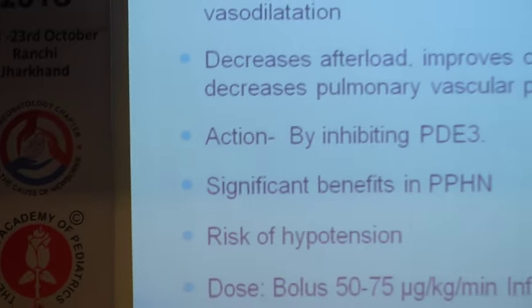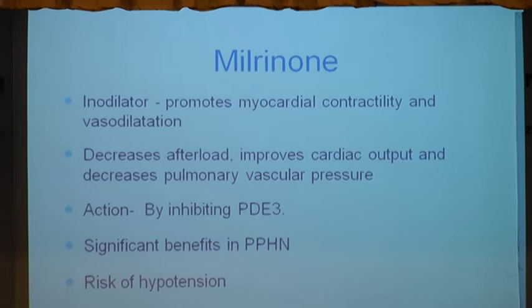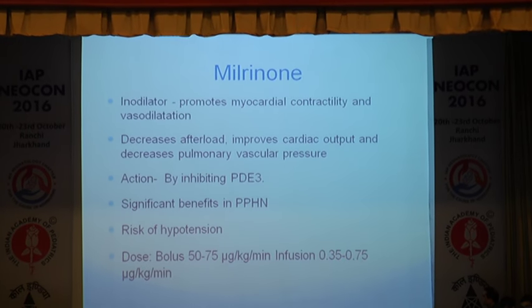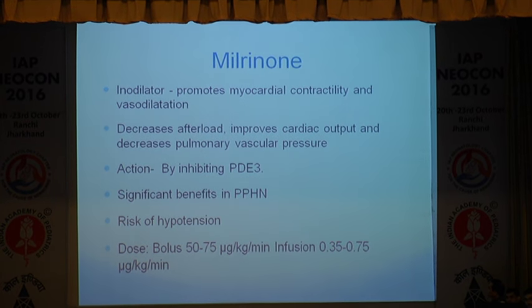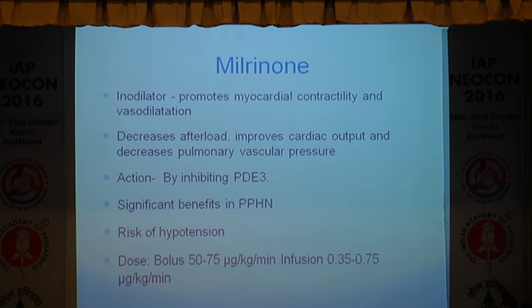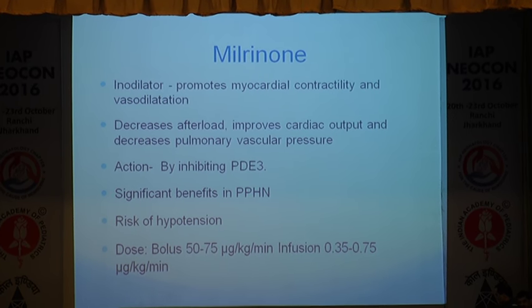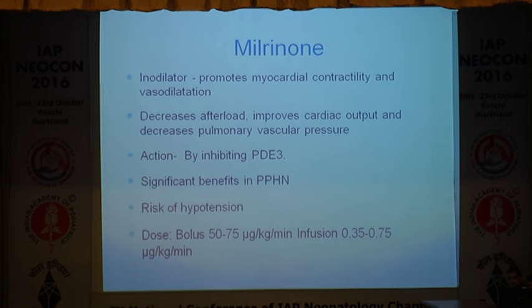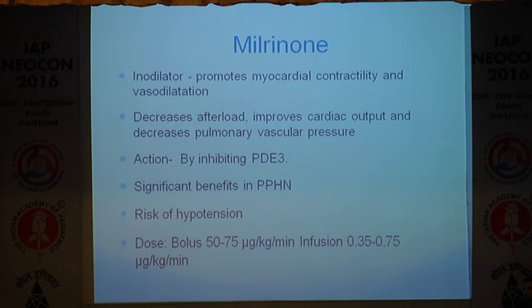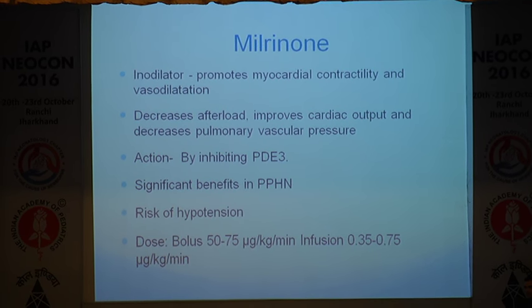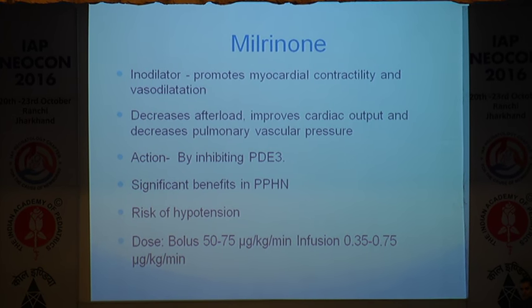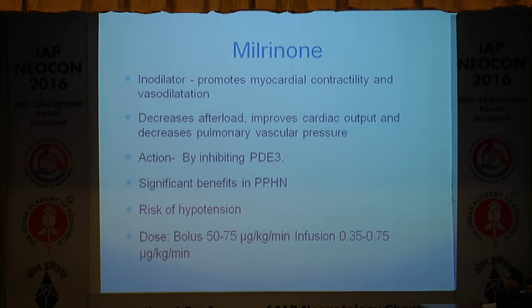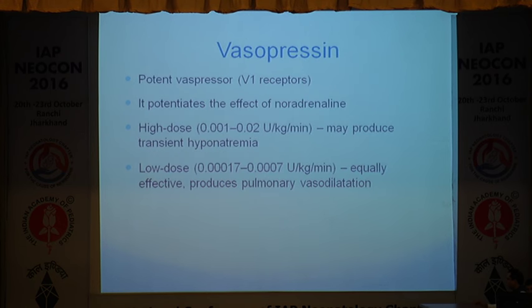Milrinone, which has been discussed, decreases afterload, improves cardiac output, and significantly brings down pulmonary vascular pressure by different mechanisms — not by catecholamine receptors, but by inhibiting the phosphodiesterase-3 enzyme. Our primary interest is whether it works well in pulmonary hypertension — and it does. But the main issue is that it can produce significant hypotension, in which case we need to use some other drugs along with it. People have used it as a bolus before infusion, but because bolus can cause profound hypotension, many clinicians actually omit the bolus and start the infusion at a higher rate initially.